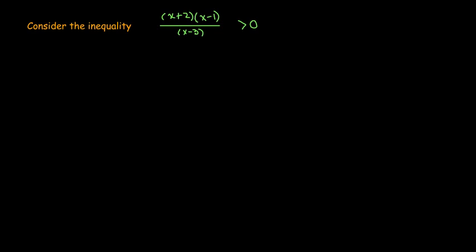In this video, we're going to look at a technique that can be used to solve inequalities with polynomial, quadratic, or rational expressions. Here's an example of what I'm talking about. I have this rational expression, and I'm going to leave it here in factored form: x plus 2 times x minus 1, all over x minus 3, is greater than 0.